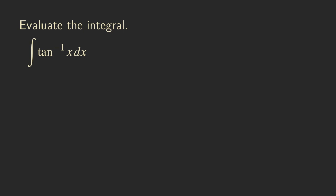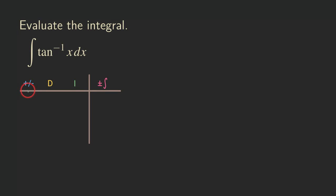So what is the formula? The formula is u·v minus the integral of v·du — but again, we probably don't even need that. We're using the tabular method to integrate the tangent inverse function. We set up the table first, and the table has four columns.